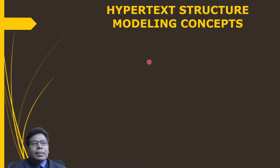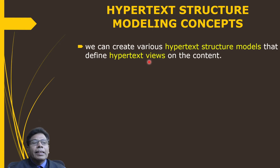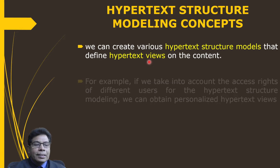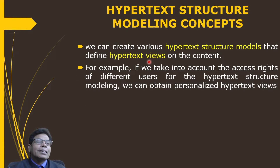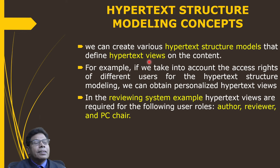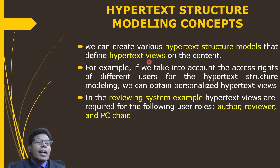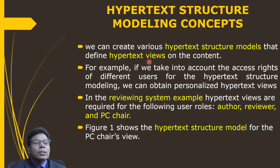We can create various hypertext structure models that define hypertext views on the content. For example, if we take into account the access rights of different users, we can obtain personalized hypertext views. In our reviewing system example — a paper reviewing system — hypertext views are required for the following user roles: author, reviewer, and program chair. The hypertext structure model is shown in figure one.